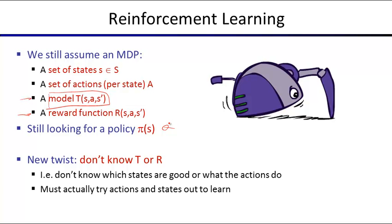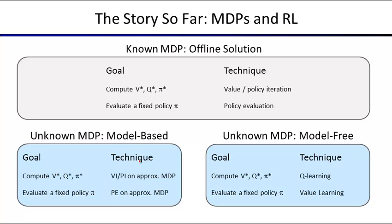The twist in reinforcement learning is that we don't know T or R. We know they exist, but we don't know what they are, so we have to learn about them while acting. If you know the MDP, you can compute the optimal value function using value iteration or policy iteration, finding optimal Q values and optimal policy pi star.